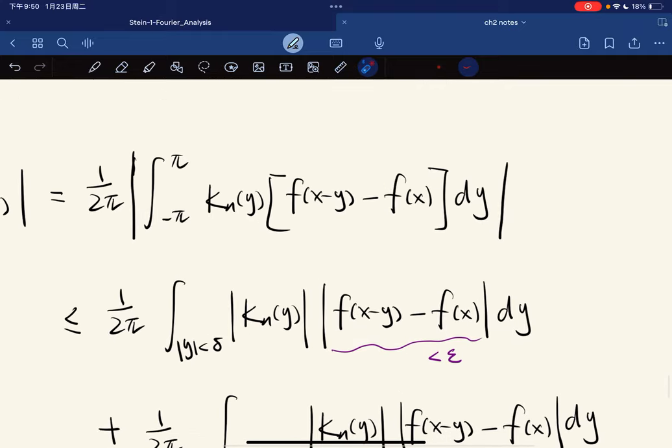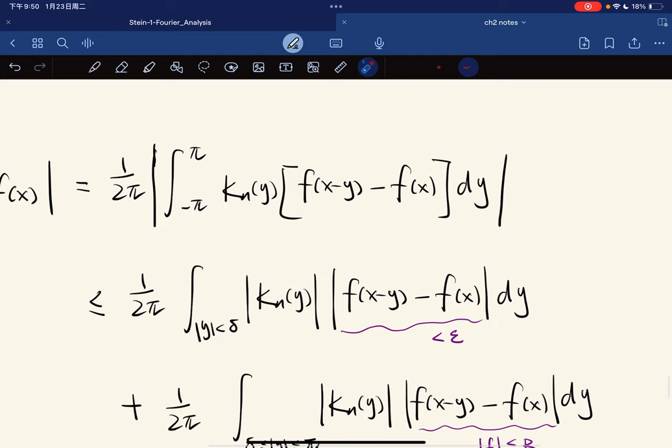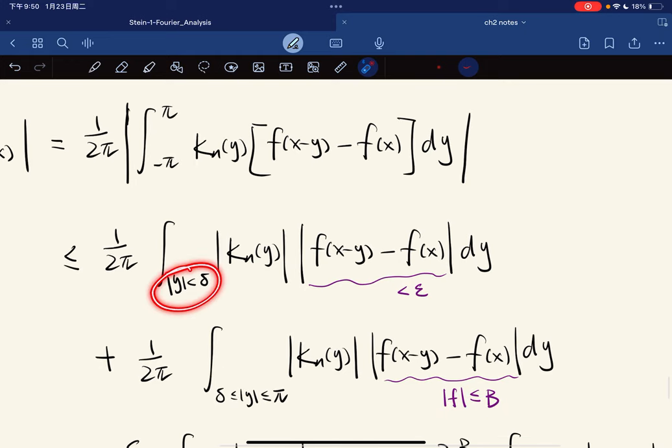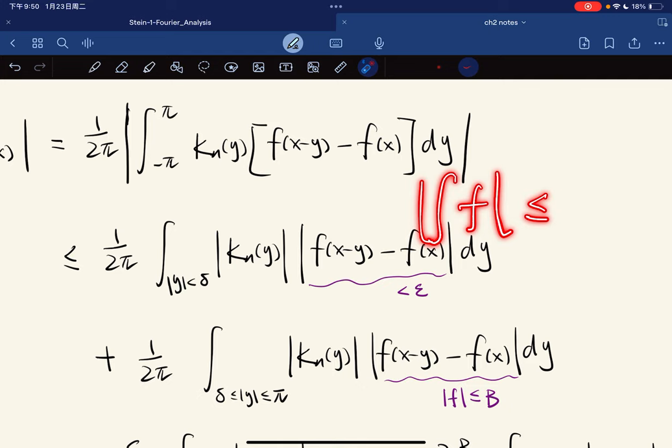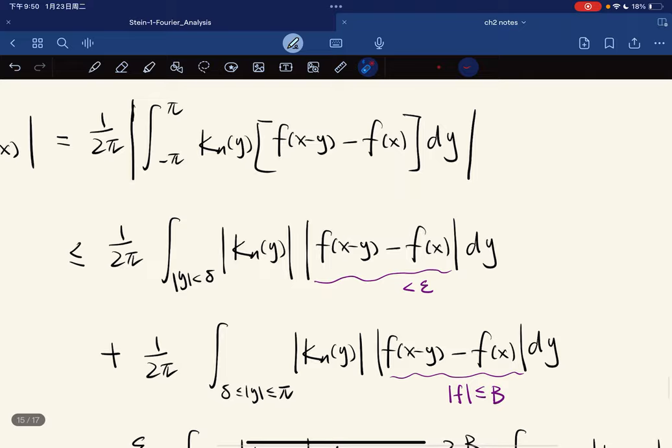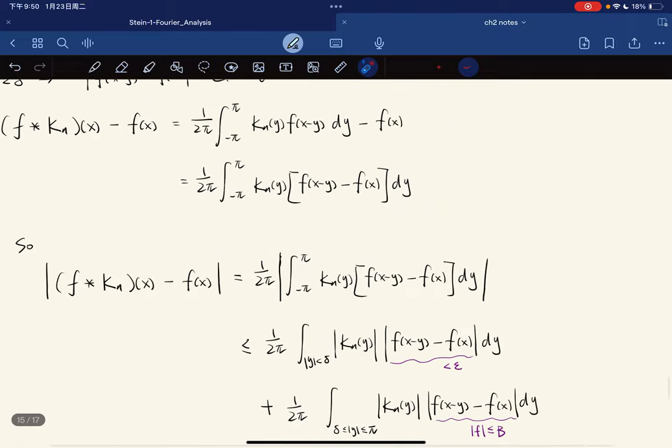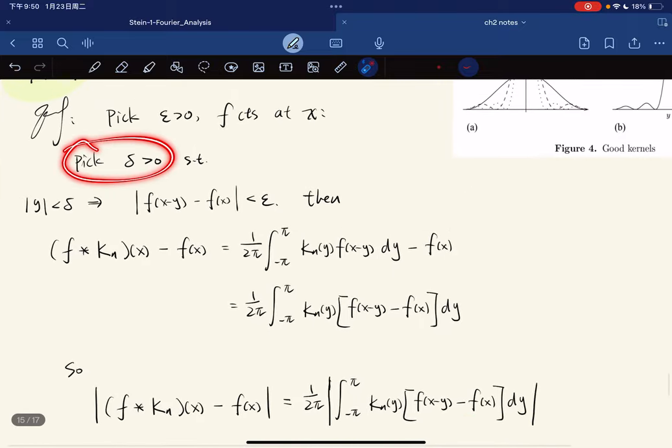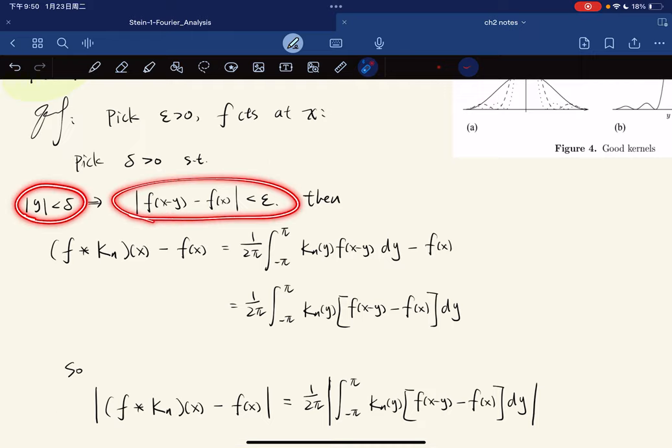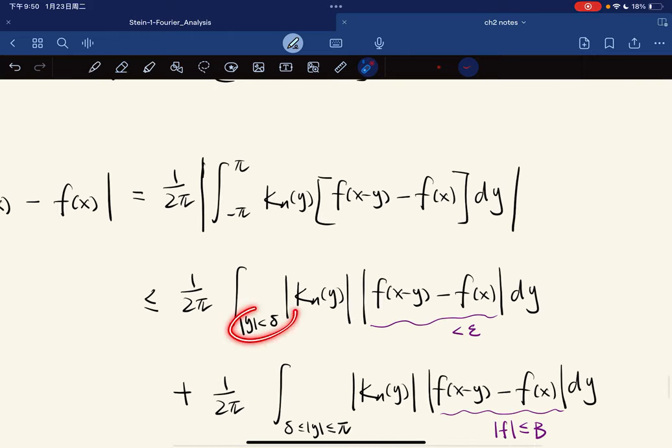We break the integral into two parts and use this inequality on both sides. Because we picked delta such that this holds, here if this is less than ε.